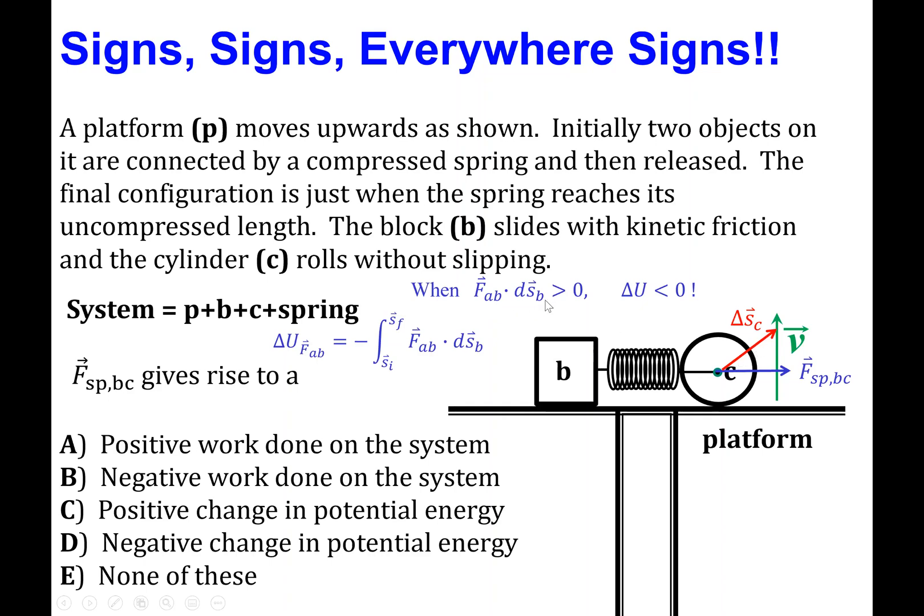Therefore the dot product between these two forces, I'm sorry, between the spring force and the displacement vector, is always going to involve a cosine of an angle which happens to be right here, and that angle happens to be less than 90 degrees, so that's always positive.